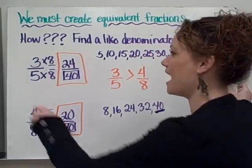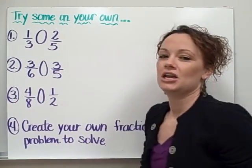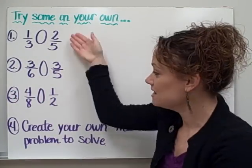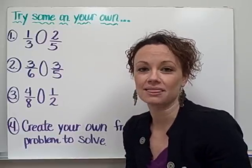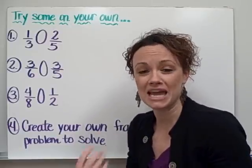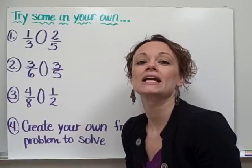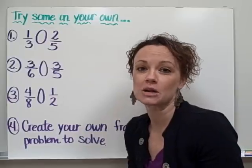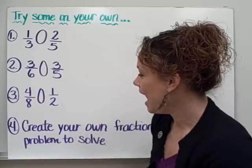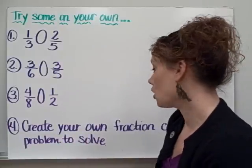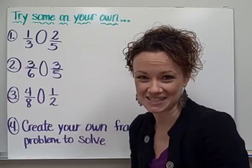Alright. It is now time for you to try some example problems on your own. You're going to be comparing these sets of fractions, remembering to first find equivalent fractions by listing the multiplication tables of each of your denominators, finding the first one they have in common, then creating equivalent fractions, and then comparing your numerators to see which is greater than, less than, or equal to the other. And for number four, I'd like you to create your own fraction comparison problem and solve that on your homework sheet in box number three as well.